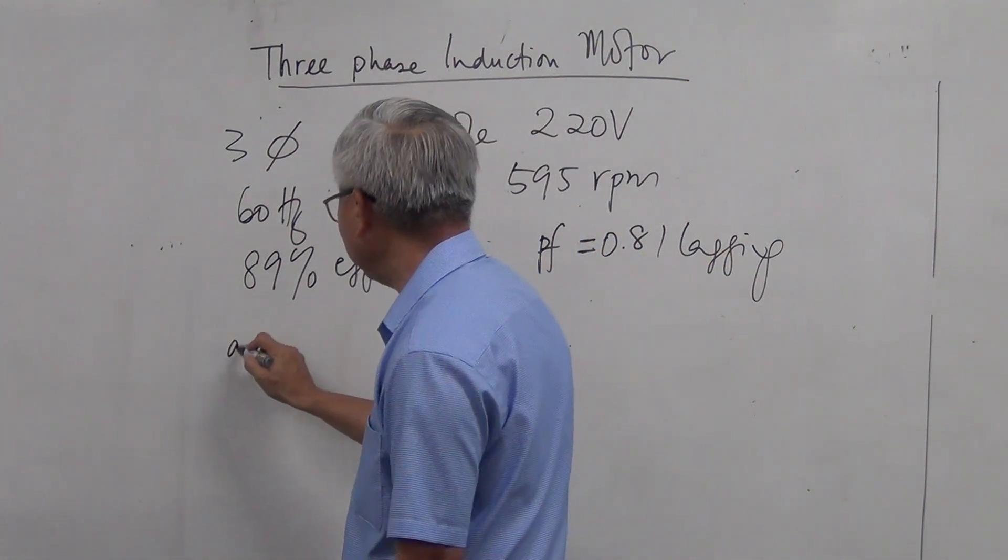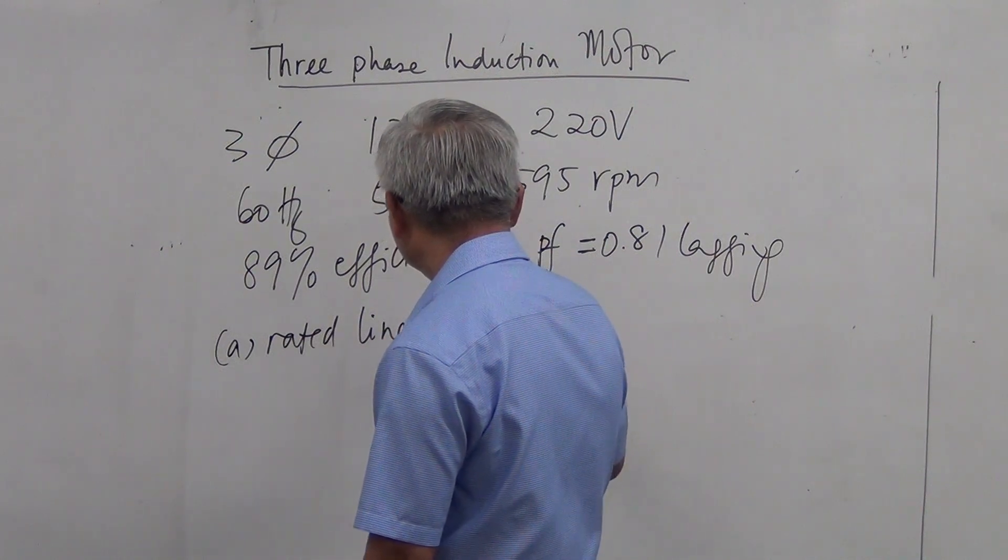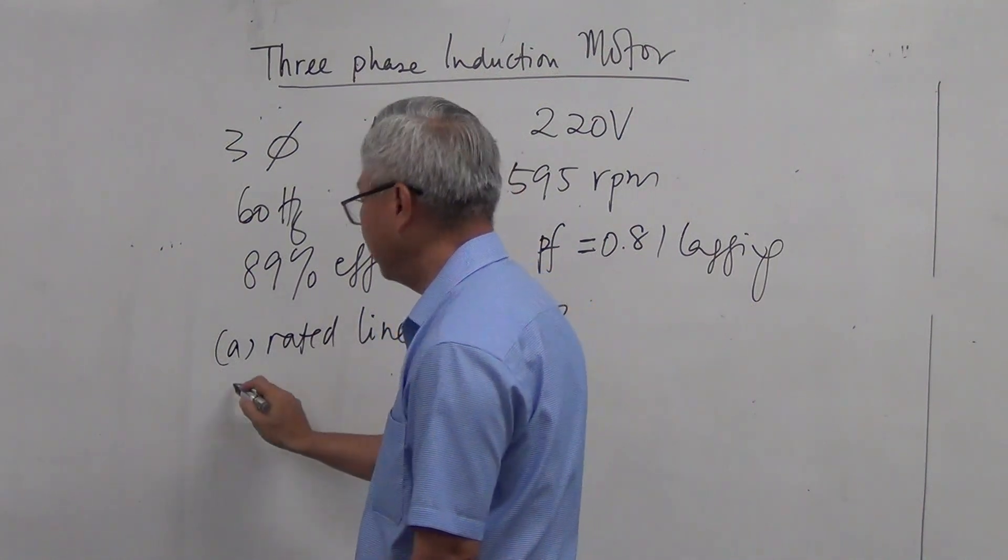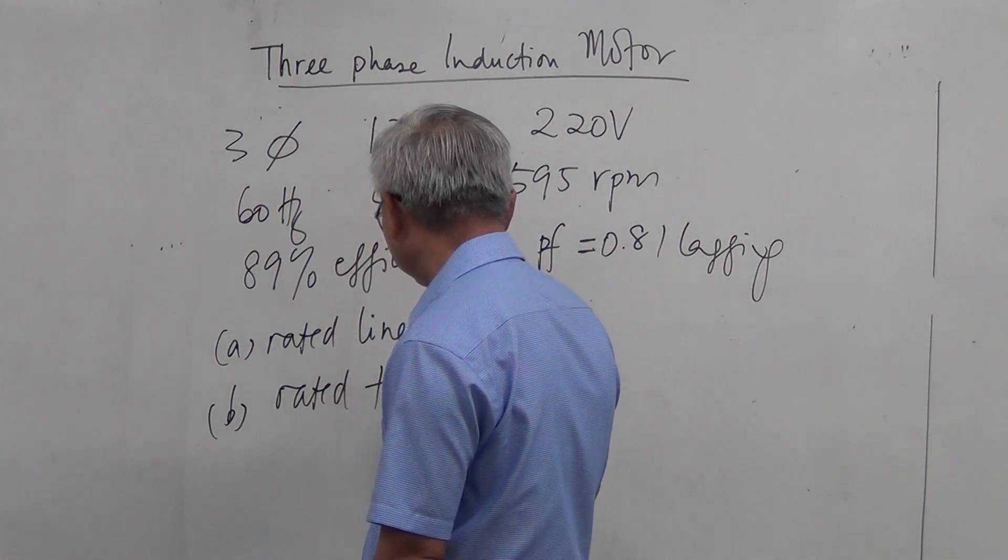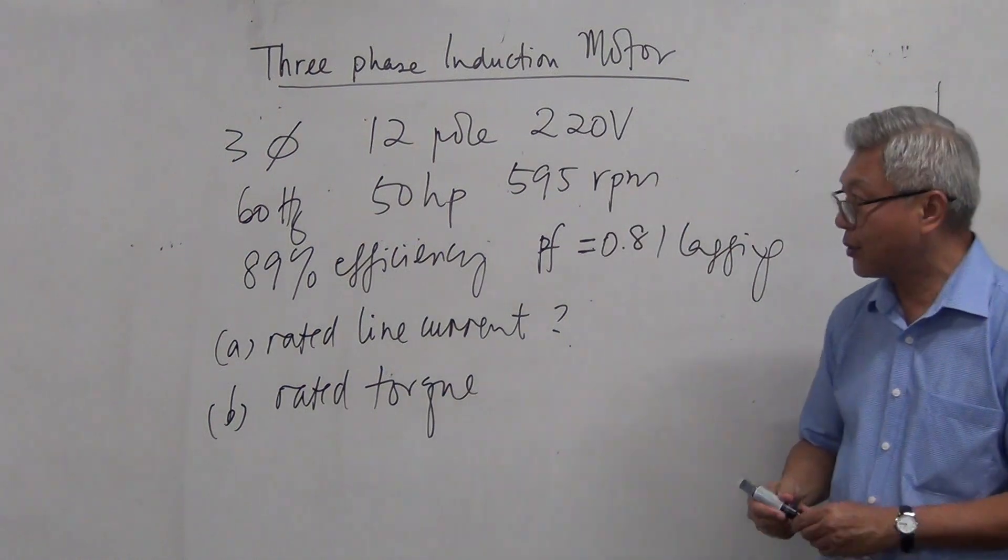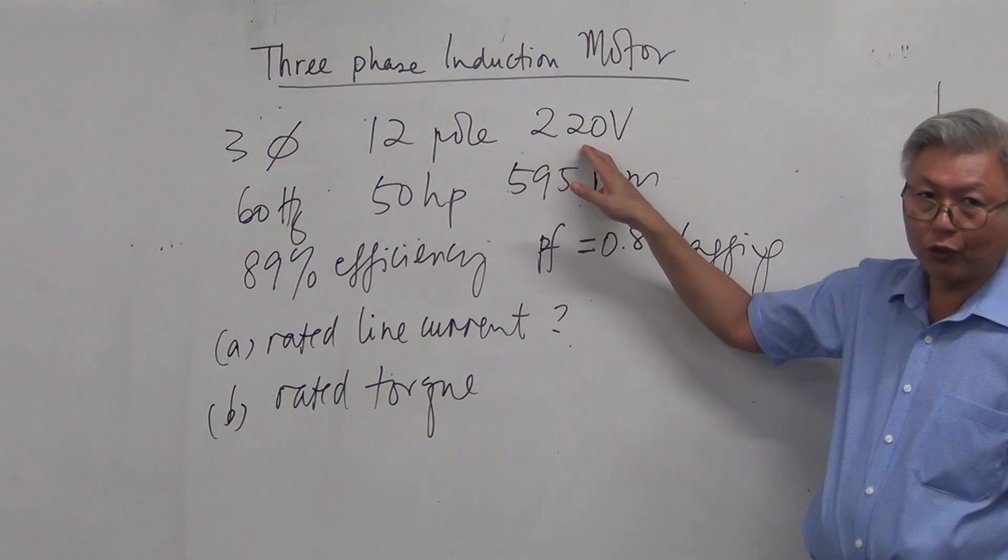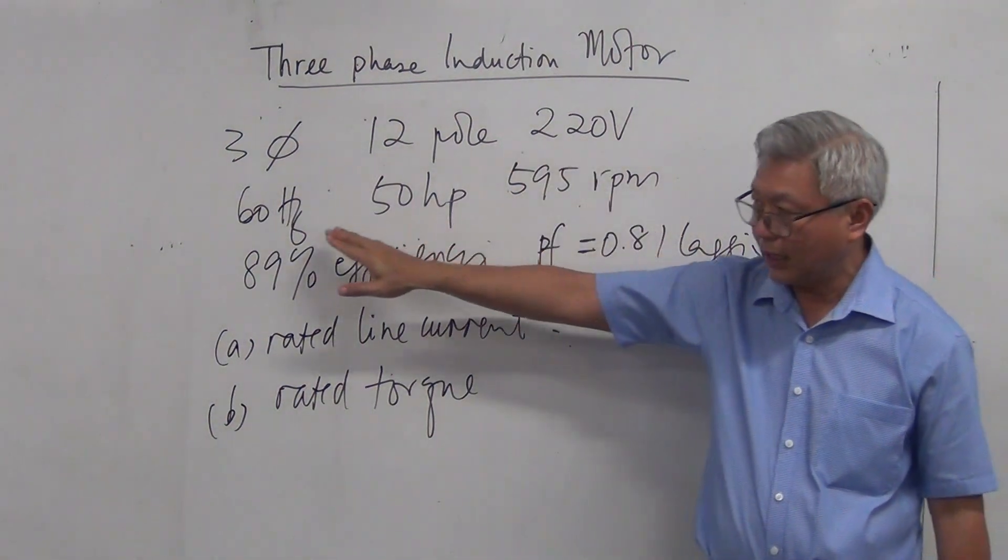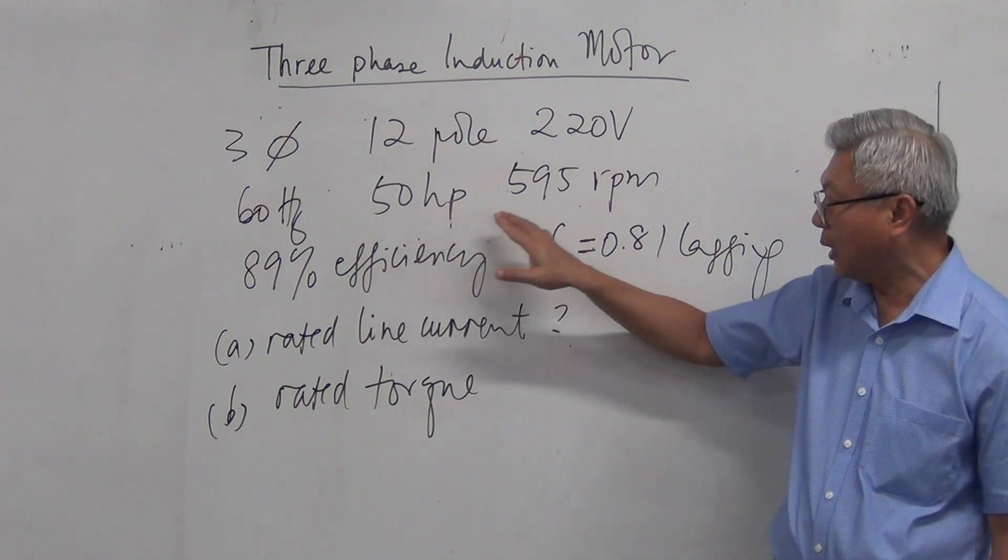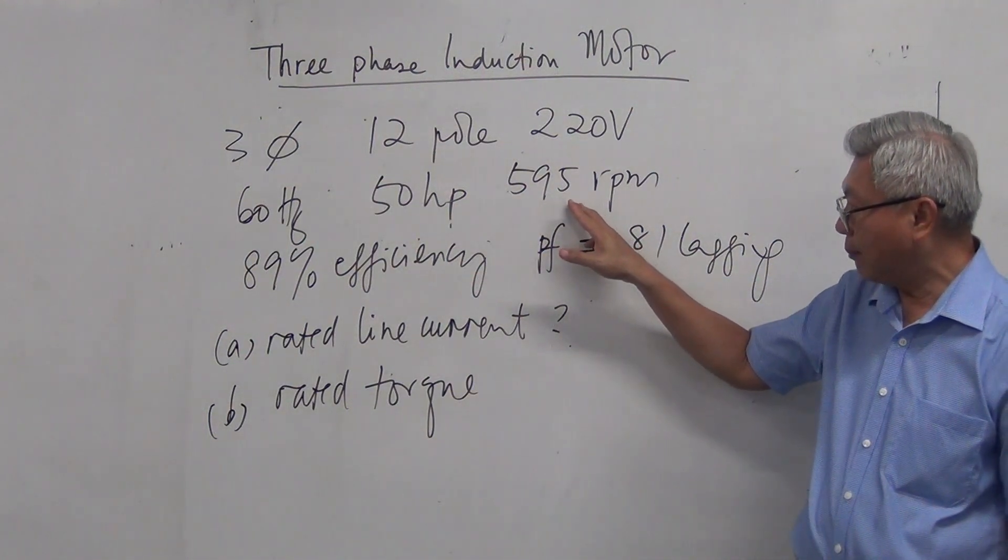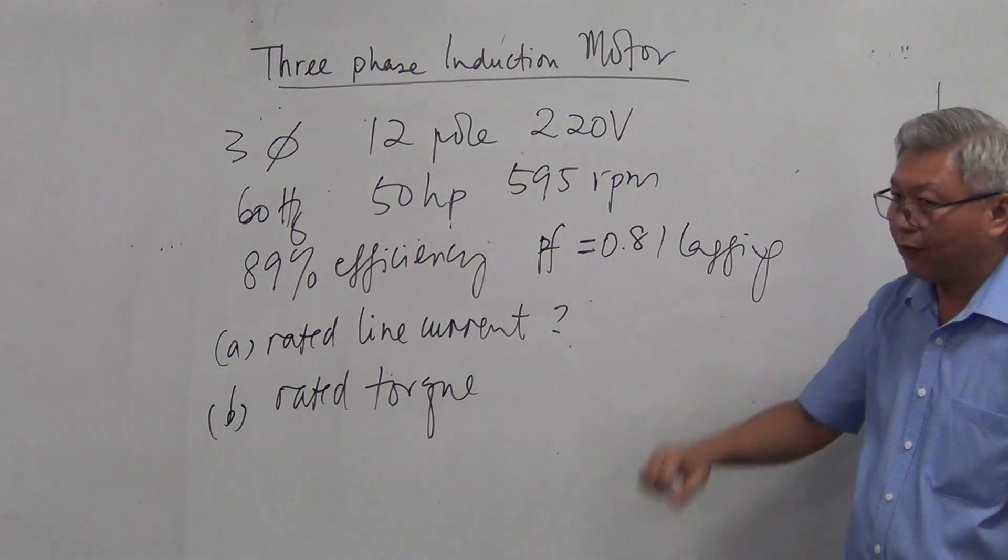And the question is, A, find the rated line current. B, find the rated torque. Rated means maximum. So let's repeat this question. It's a three-phase induction motor, it's 12-pole, the input voltage is 220 volt, 60 hertz, 50 horsepower output power, 595 rpm, 89% efficiency, power factor is 0.81. We are asked to find the rated line current.